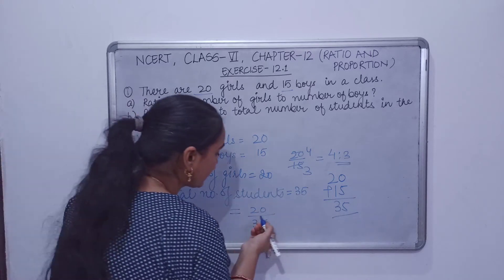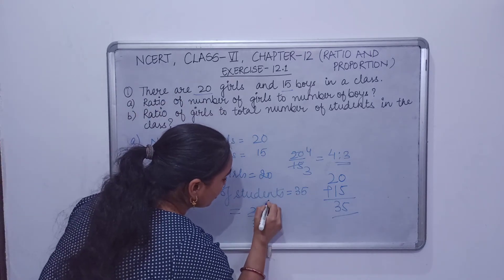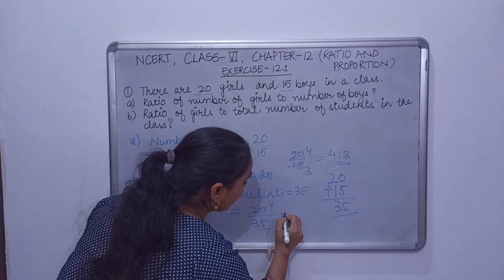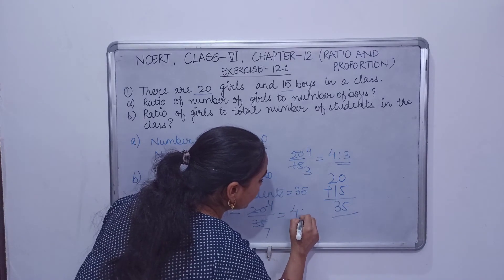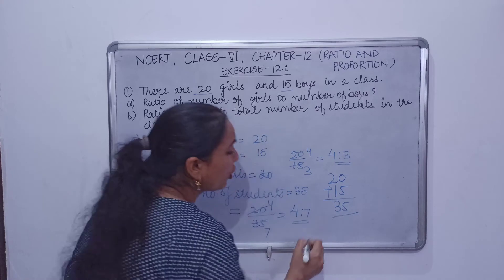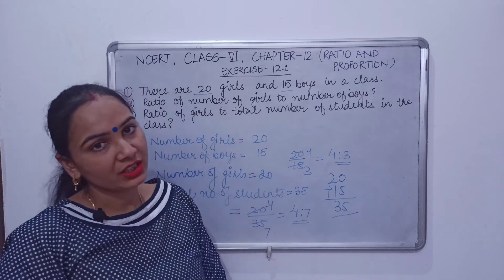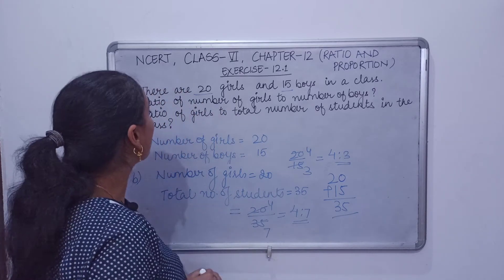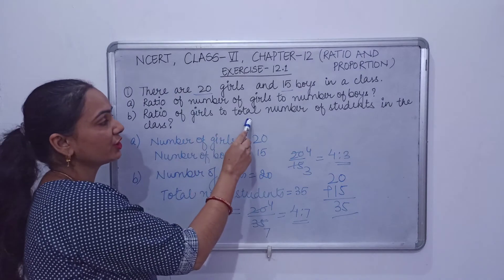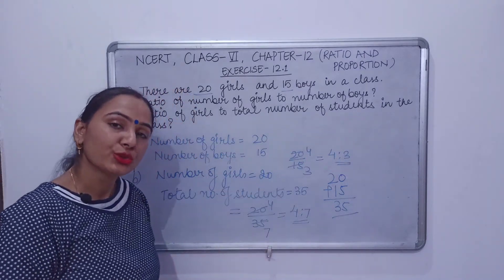Now we have to cancel. So 5 fours of 20, okay? 5 sevens of 35. So 4 is to 7, or we can say 4 ratio 7, is the ratio of number of girls to the total number of students in the class.